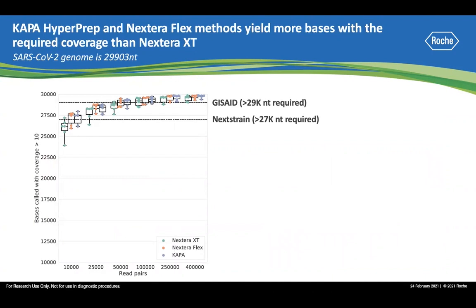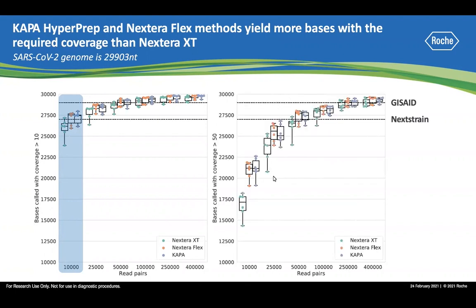The genome size of SARS-CoV-2 is close to 30,000 nucleotides. Ideally, you want to resolve on a very single-nucleotide basis if possible, but with amplicon sequencing that is not possible. The completeness threshold for GISAID is 29,000 nucleotides, and for Nextera Flex it is 27,000. For a given number of reads at 10X coverage, the KAPA HyperPrep workflow and Nextera Flex were able to generate more complete viral genome sequences than the Nextera XT workflow.